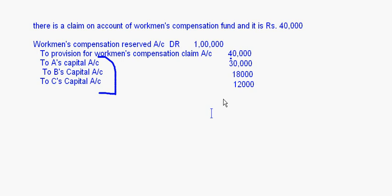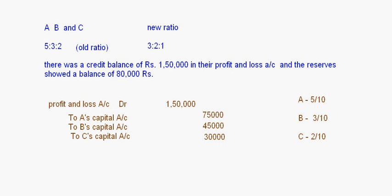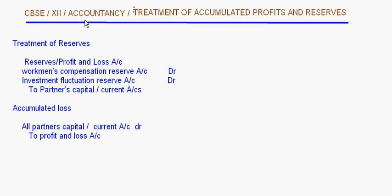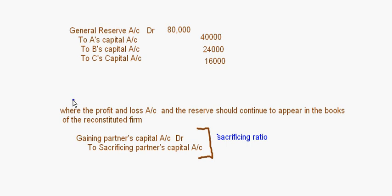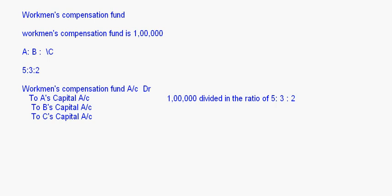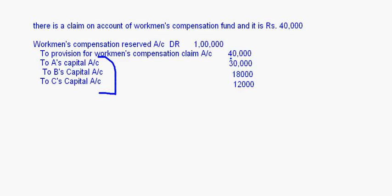With that, today's session on treatment of accumulated profits and reserves is complete. The journal entries covered: the standard distribution case, the case where profit and loss account and reserves continue to appear in the books using the sacrificing ratio, and the workman's compensation fund with and without a claim. That's it for today.